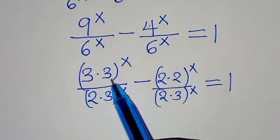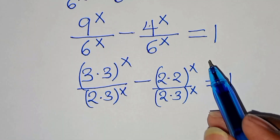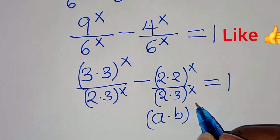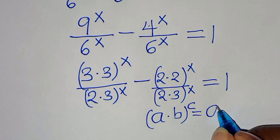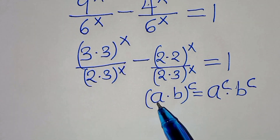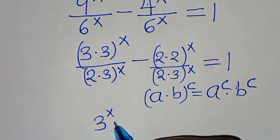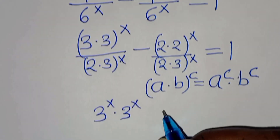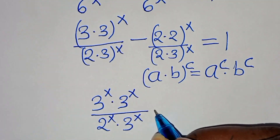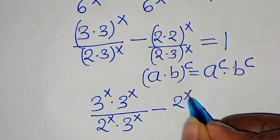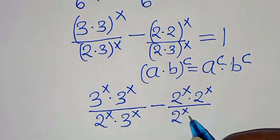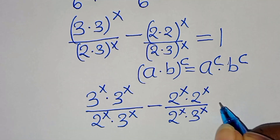Now, 3 times 3 to the power of x, or 2 times 2 to the power of x, is in the form a·b^x, which we can express using the property (ab)^c = a^c · b^c. Applying this, we get 3^x times 3^x divided by 2^x times 3^x, subtract 2^x times 2^x divided by 2^x times 3^x, equal to 1.